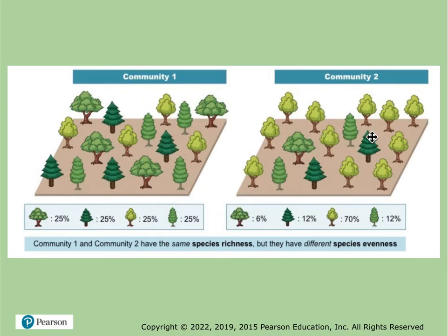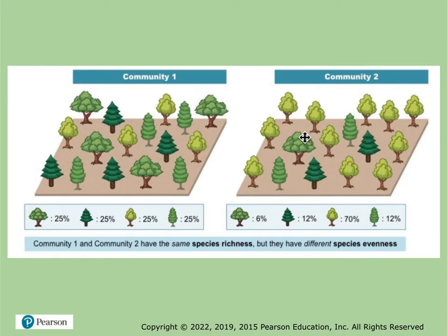If we look at two communities, community one and community two, they both have the same species richness — the same types of trees. However, in community two, if the lighter green one was like a sycamore, sycamores are a lot more abundant, meaning they are doing a lot better there. But there is only one of another type of tree, so it may not be able to reproduce — your chances of it thriving over time are decreased. For example, people might say that mountain lions live in Southern California, which is true, but they are not necessarily extremely abundant.